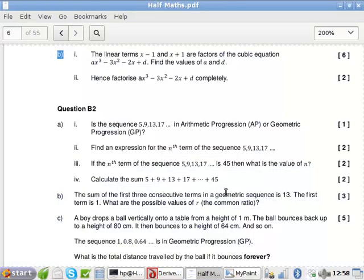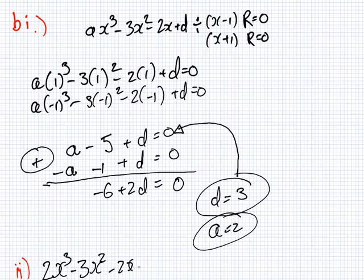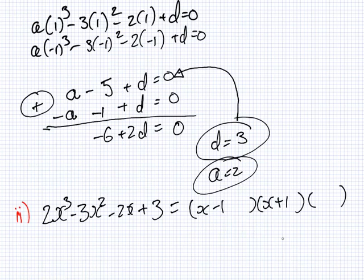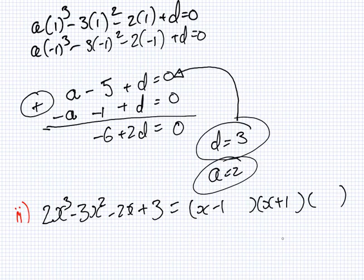So the second part here, it wants it factorized. You have ax³ minus 3x² minus 2x plus d, and you want the three factors here. We already know two of them: x minus 1 and x plus 1. How can I find the third factor? Yeah, that's one way to do it, but I have a better way to do it. Anyone know what it is?